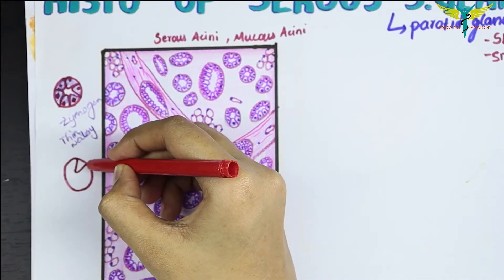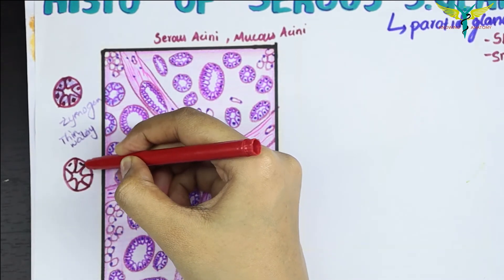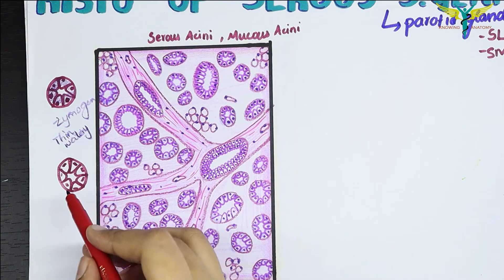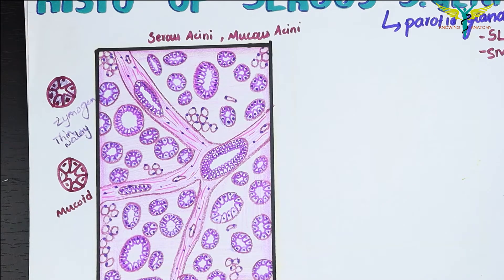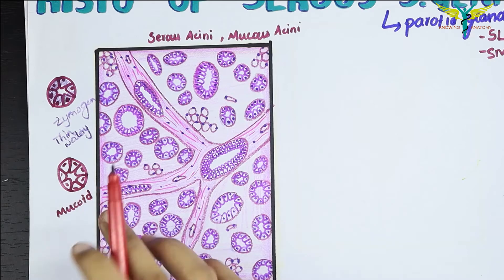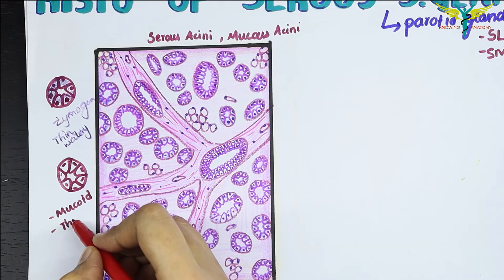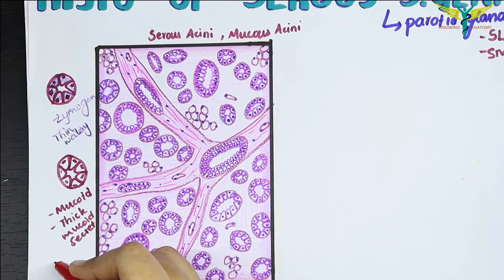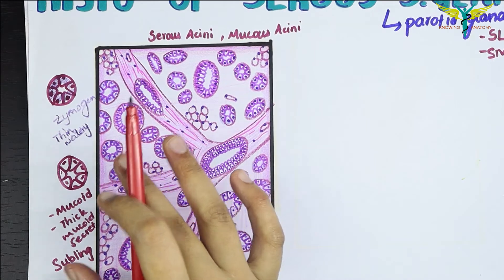Serous acini secrete thin watery secretions. The mucous acini contain cells with a flat nucleus that also lies at the base. Their cell boundaries are distinct. These mucous acini contain mucoid material, appear lightly stained and empty in hematoxylin and eosin stain, and secrete thick mucoid secretion. Many mucous acini are found in the sublingual gland.